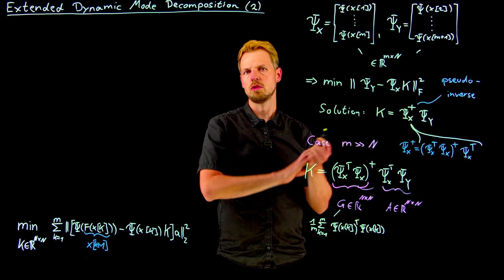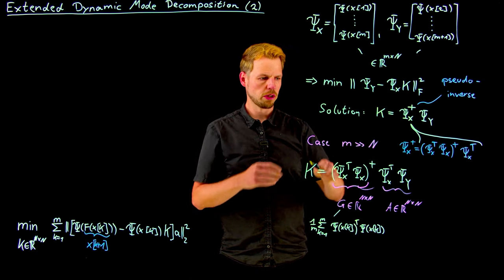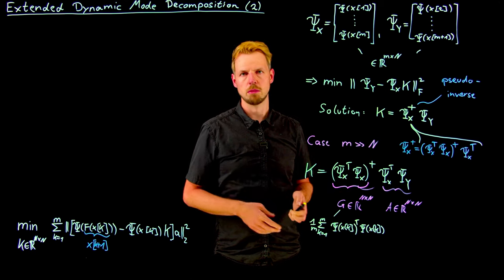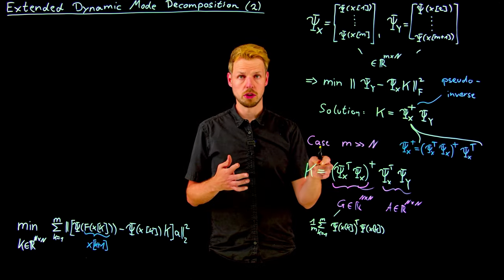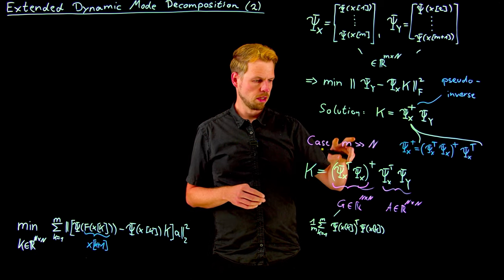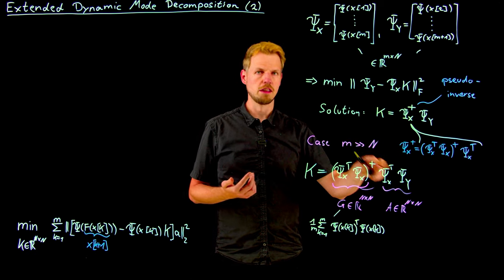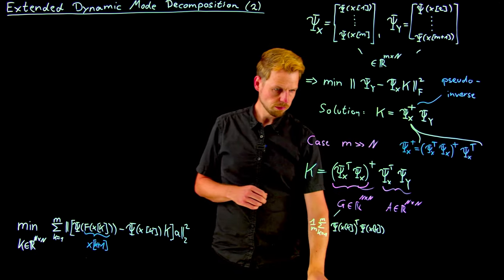And for those of you who know a little bit about proper orthogonal decomposition, this would be related to the method of snapshots there. Also if we're talking about finite elements, this would be some sort of a mass matrix and a stiffness matrix in this context.